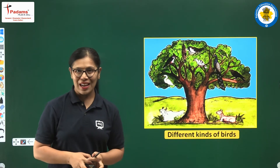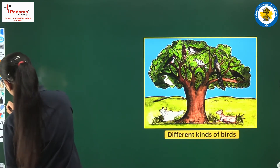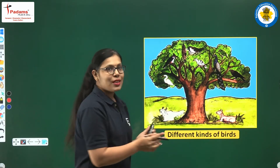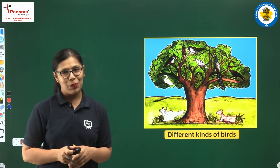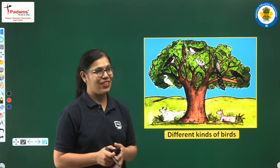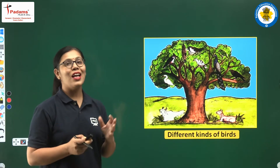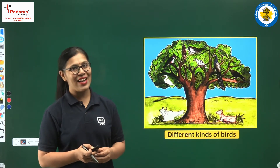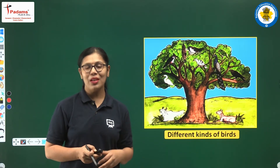Let's start. See this is a beautiful picture and there are different kinds of birds. You can see different birds sitting on this particular tree. You must have seen some of these birds — like parrot, peacock, crow, sparrow, ducks, etc. These are different kinds of birds and they are quite interesting as they have different kinds of beaks and claws.